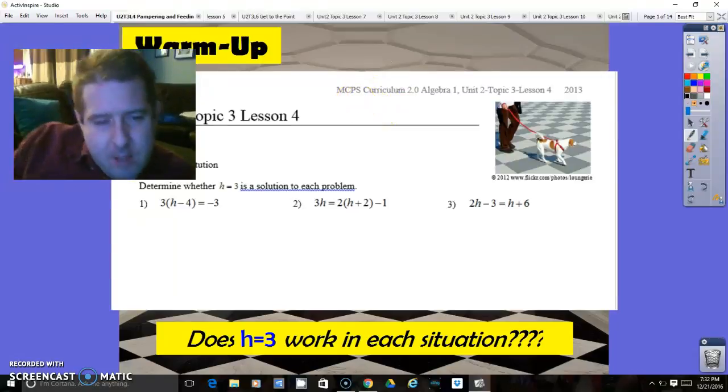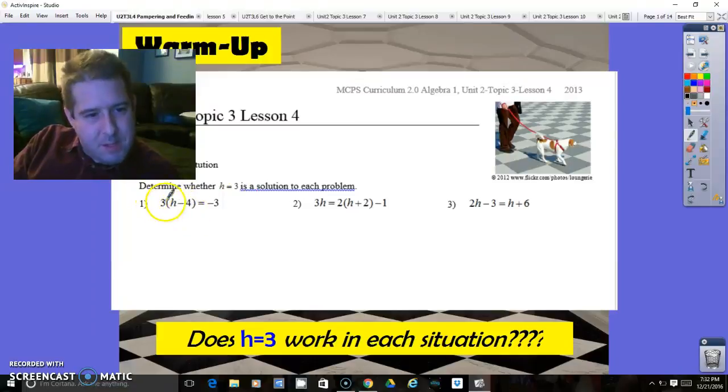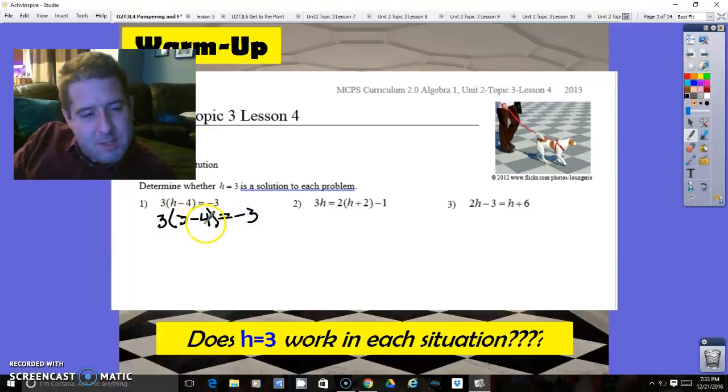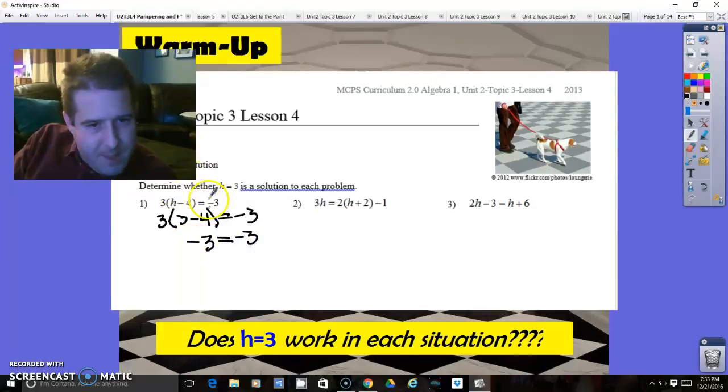We're going to start off with substitution, taking h equals 3 and solving each problem by substituting that in. So that would be 3 times 3 minus 4 equals negative 3. 3 minus 4 is negative 1. Negative 1 times 3 is negative 3. So that is a true statement. That is equal.